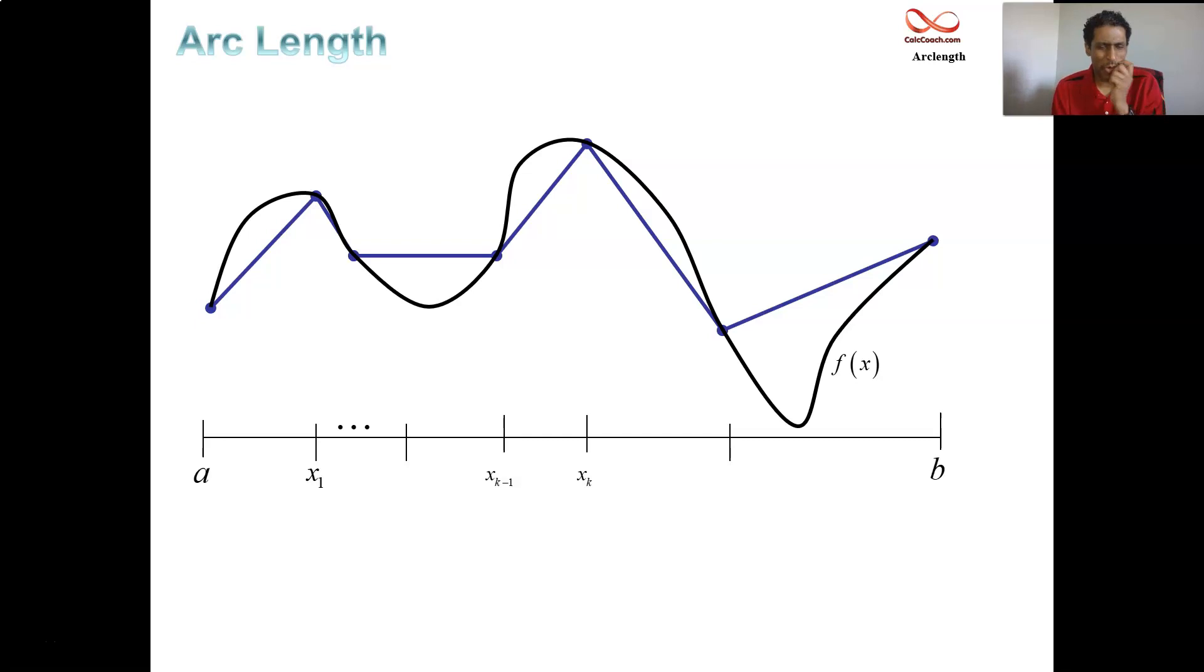Let's take a look at this one in particular, the xk minus 1 xk interval. I have two points there on the curve and I am going to make a right triangle and find the hypotenuse length. The point on the left has x-coordinate xk minus 1, the y-coordinate is f of that. The point on the right has x-coordinate xk, and the y-coordinate is f of that.